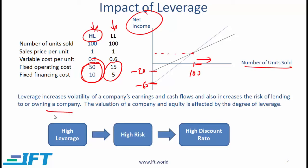Leverage increases the volatility of a company's earnings and cash flows and also increases the risk of lending or owning a company. From an analyst perspective, when evaluating a company's level of risk, one of the most important things to look at is the degree of leverage. The high leverage firm is more risky: if sales are high, net income increases a lot, but if sales are lower than expected, losses will be much greater. High leverage implies higher risk, which means we use a higher discount rate in valuation, and all else equal, high risk has a negative impact on valuation.